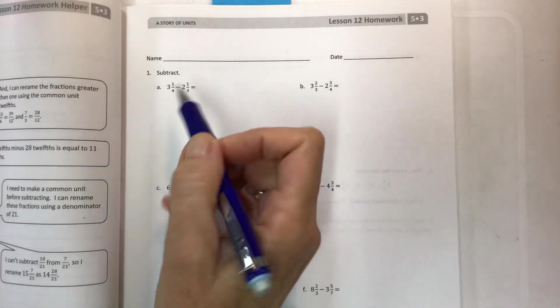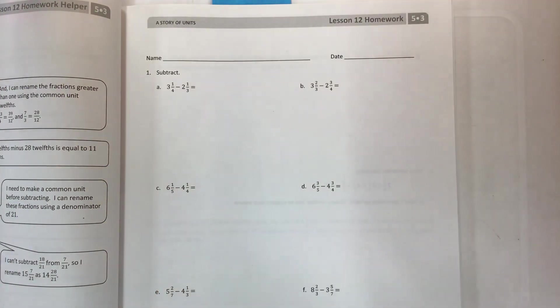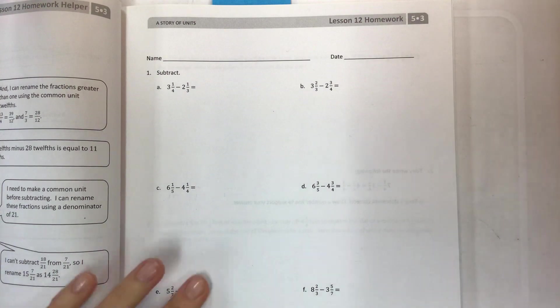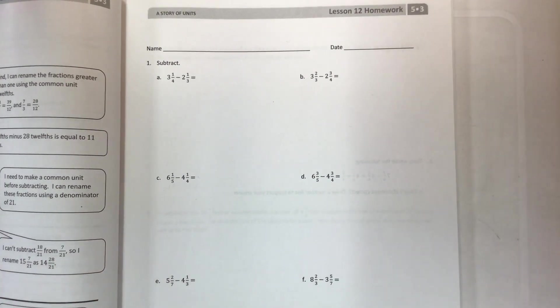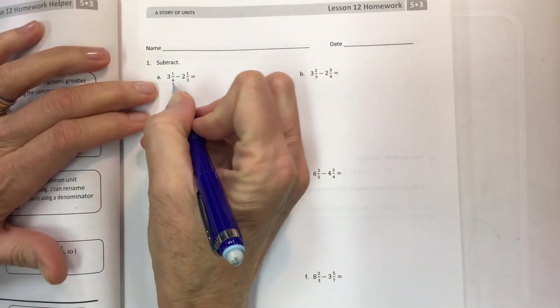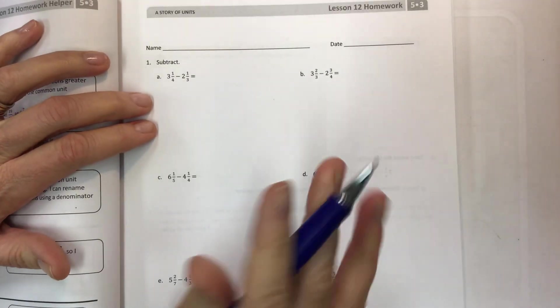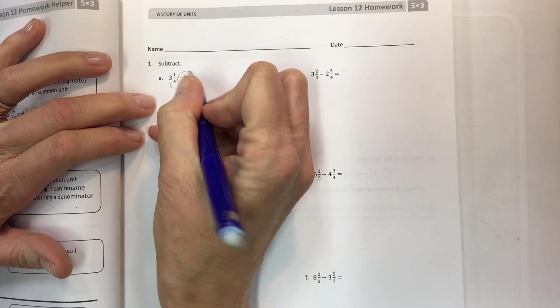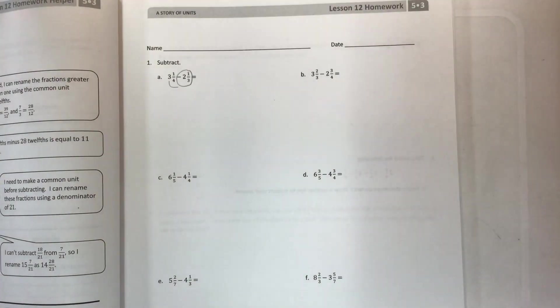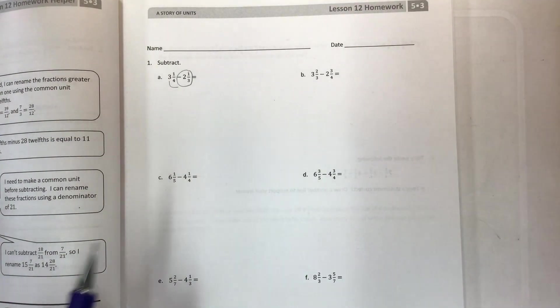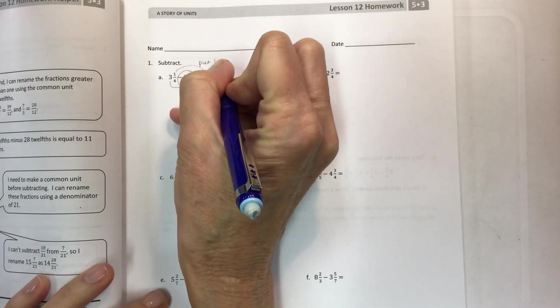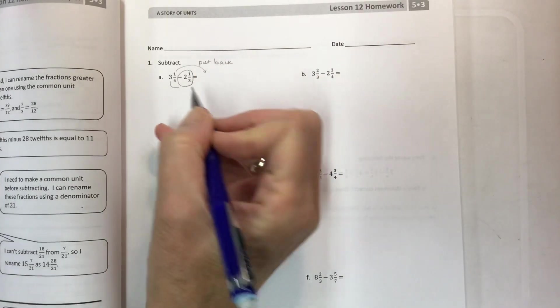Okay, and thankfully we don't have to use any area models or number lines or anything. The objective of today is to just subtract fractions greater than or equal to one. So my favorite method that is really easiest for you guys is to take the whole number and subtract the whole thing in one step and then put back this fraction.